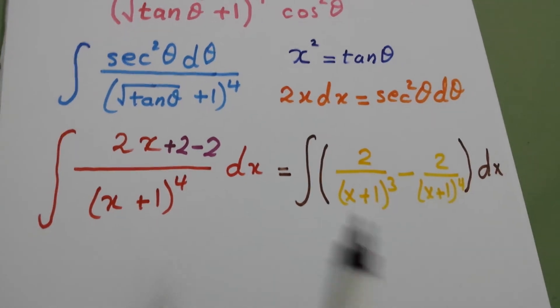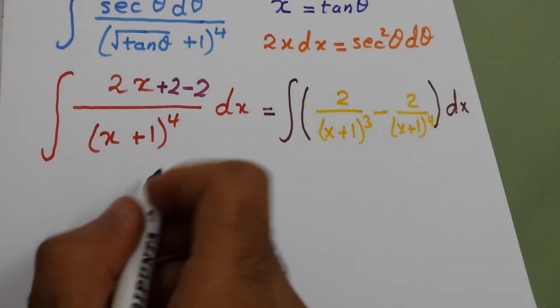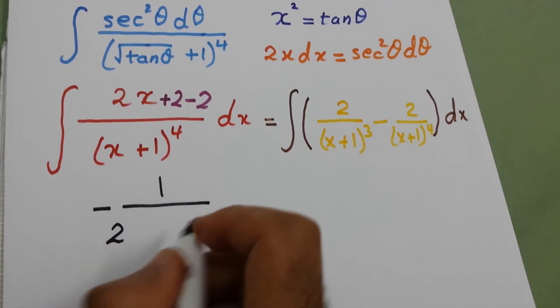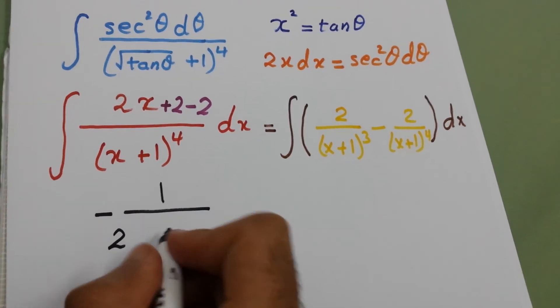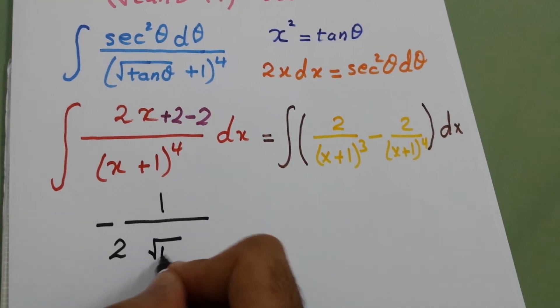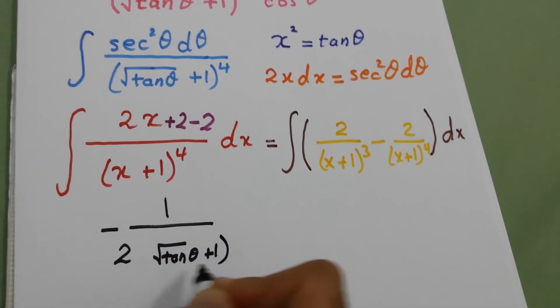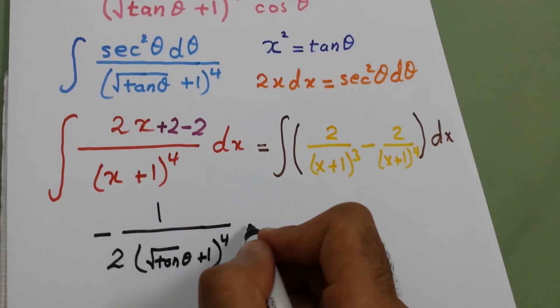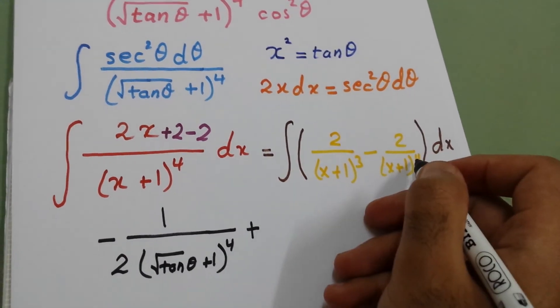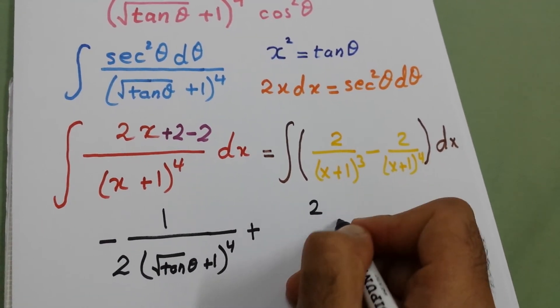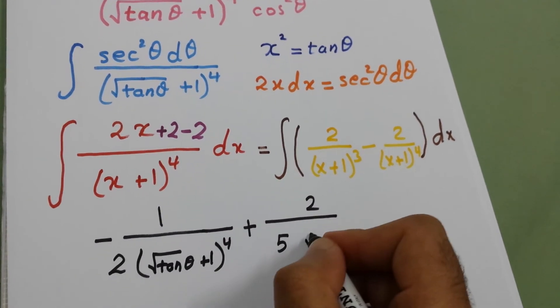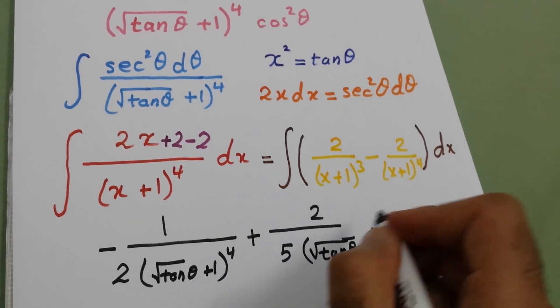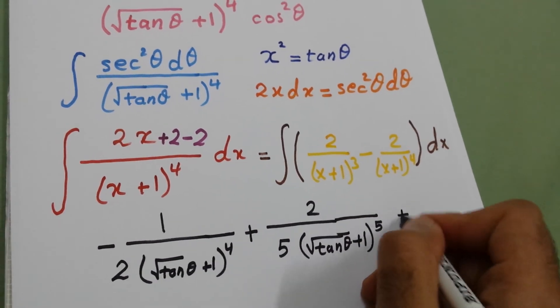So this integration will be one over two times x plus one, which is square root of tan theta plus one to power four. Then it will be plus, because we will multiply by, divide by minus five, two over five times square root of tan theta plus one, all to power five, plus the constant.